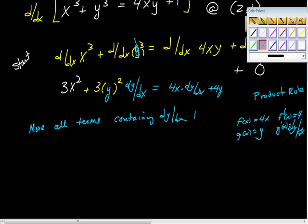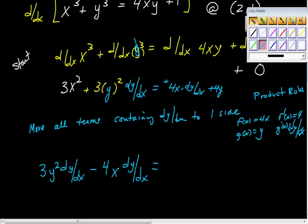Containing dy/dx to one side. What side? It doesn't matter. I'm going to move it all to the left, I think. So I'm going to get 3y² dy/dx. I'm going to move this one. This was positive, so I'll move it over as negative. Minus 4x dy/dx.